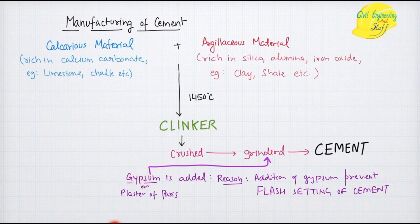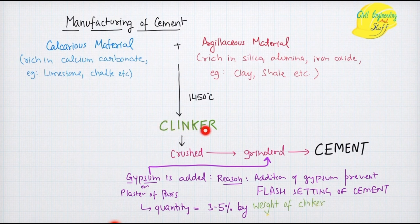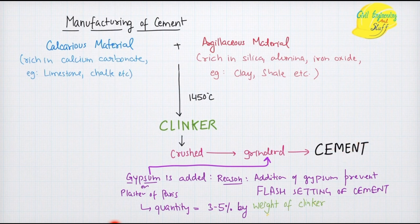The addition of gypsum during the grinding process prevents the flash setting of cement, which is very important. The quantity at which gypsum is added is around 3 to 5 percent by weight of clinker. So around 3 to 5 percent by weight of the clinker produced, gypsum is added during the grinding process.